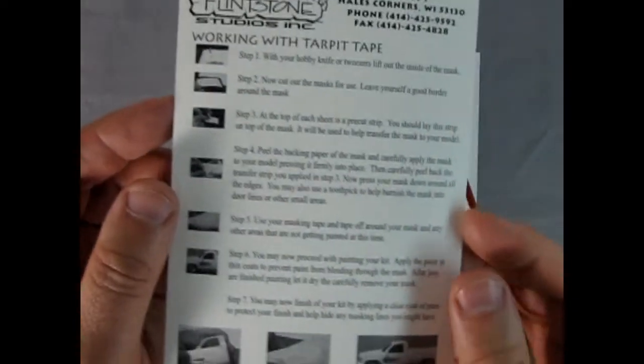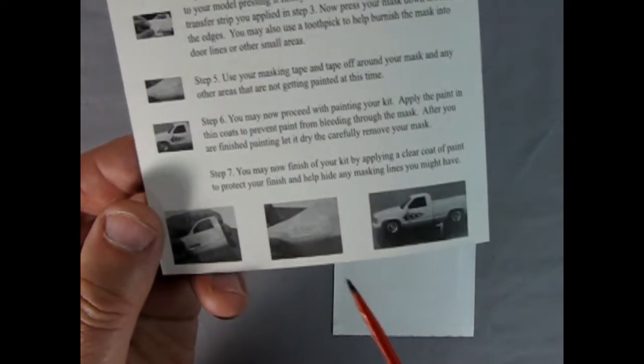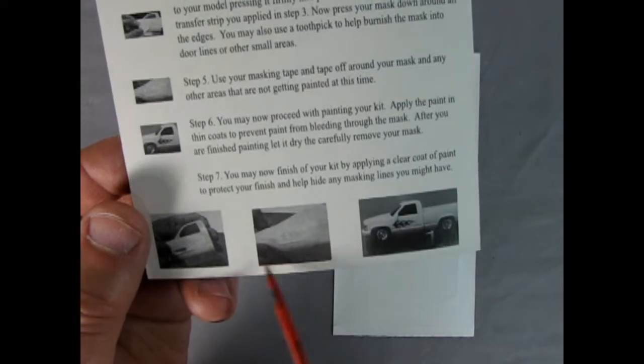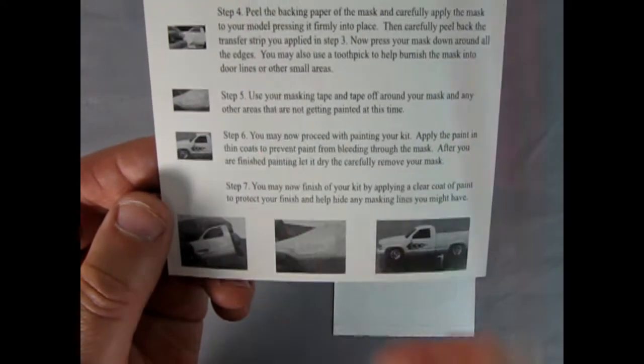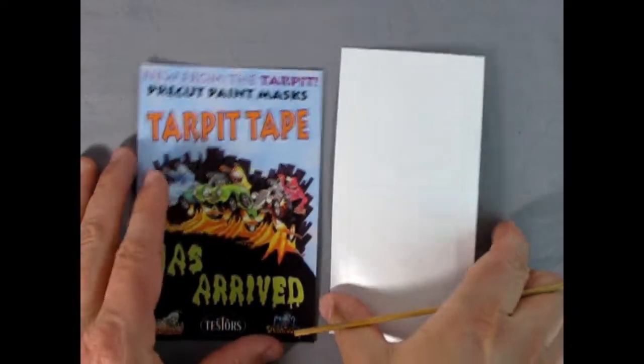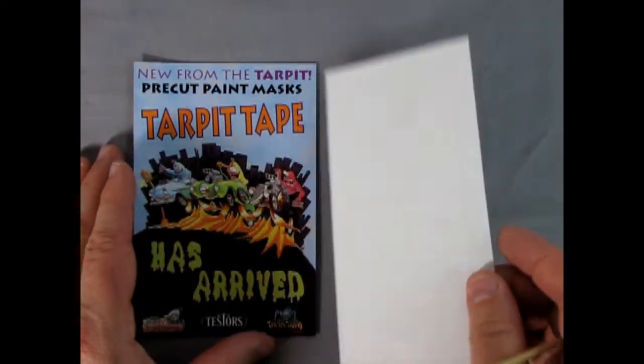So it shows you how to work with the tar pit tape in the seven easy steps with pictures so that you can get your model looking great. And there it is, like I say, you leave the frisket open and you mask the rest of the car. Then you paint it and you got your little flames or in this case these very interesting 1990s style scallops.